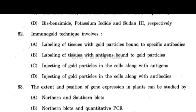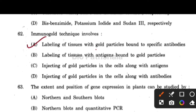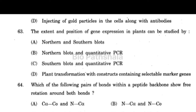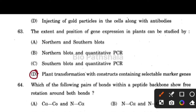Next question: immuno-gold technique involves option number A — labeling of tissue with gold particles bound to specific antibodies. Next question: the extent and position of gene expression in plants can be studied by option number D — plant transformation with constructs containing a selectable marker gene.